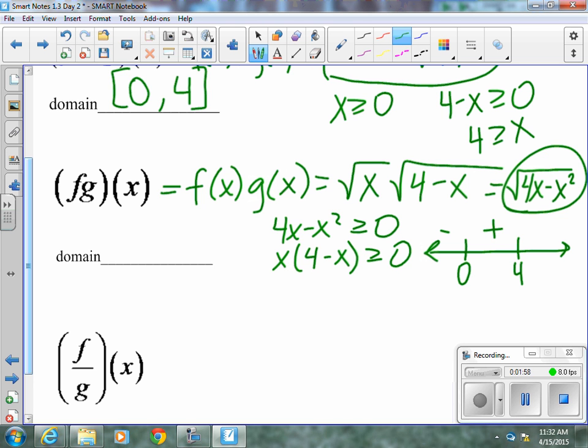And if we plug in a 5, we get a positive times a negative, which is a negative, which means it is positive from 0 to 4. And it's a greater than or equal to sign, so that 0 and that 4 are included.